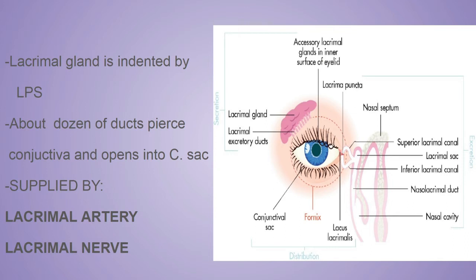After removal of the palpebral part, the conjunctiva and cornea are moistened by the accessory lacrimal gland. Removal of the palpebral part is almost equivalent to removal of the lacrimal gland, so the accessory lacrimal gland will then function in moistening of the eye.